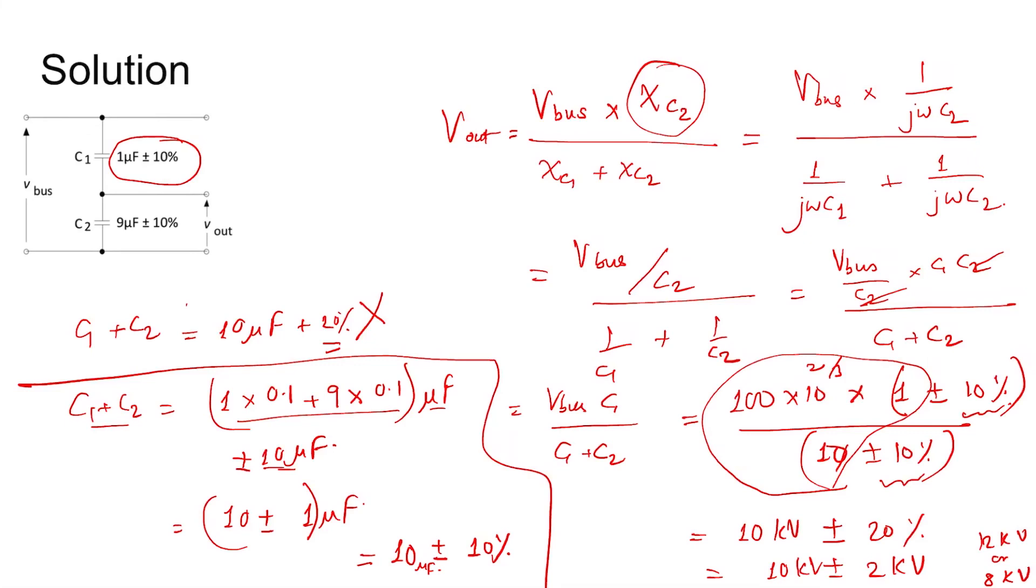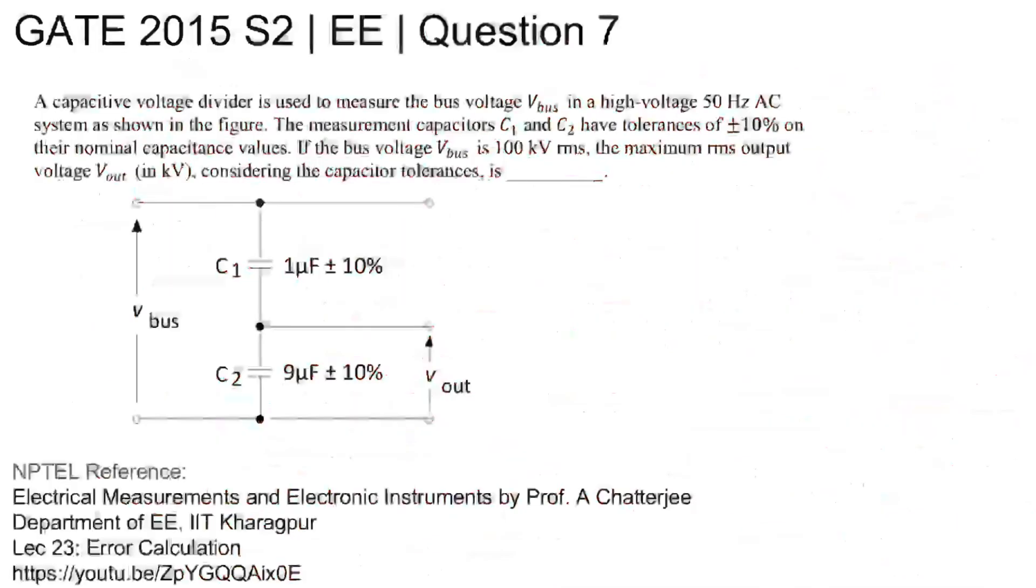So maximum possible RMS output voltage is 12 kV, considering the capacitor tolerances. So this is the answer - the maximum RMS output voltage V_out is 12 kV. Thank you.